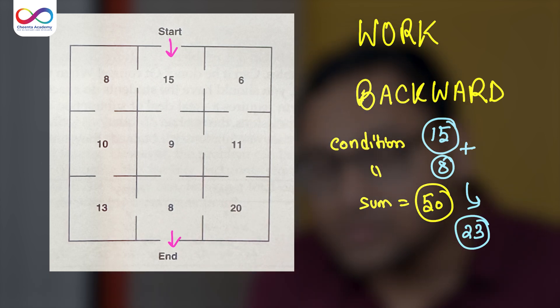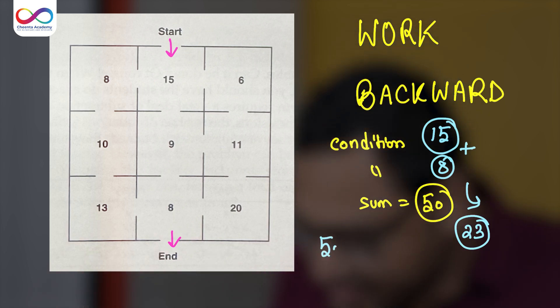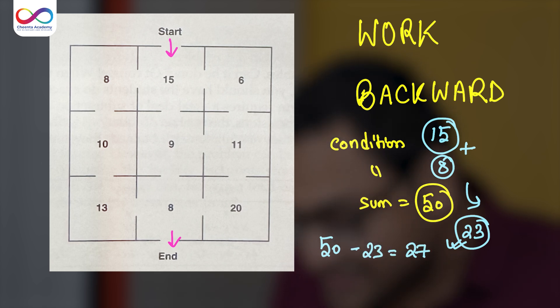Now what do we do? Well, as I said, we look at what is remaining. So from 50, if 23 is taken away, we are left out with 27.